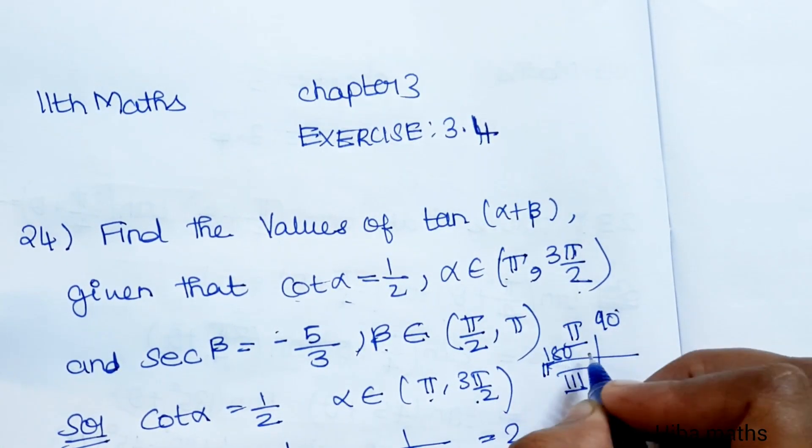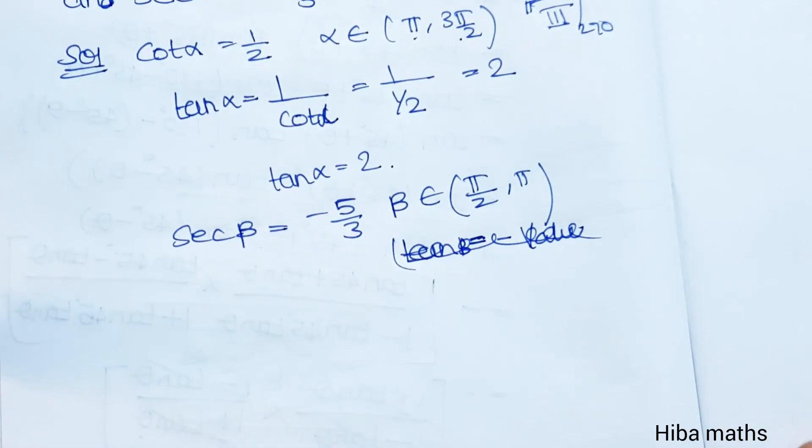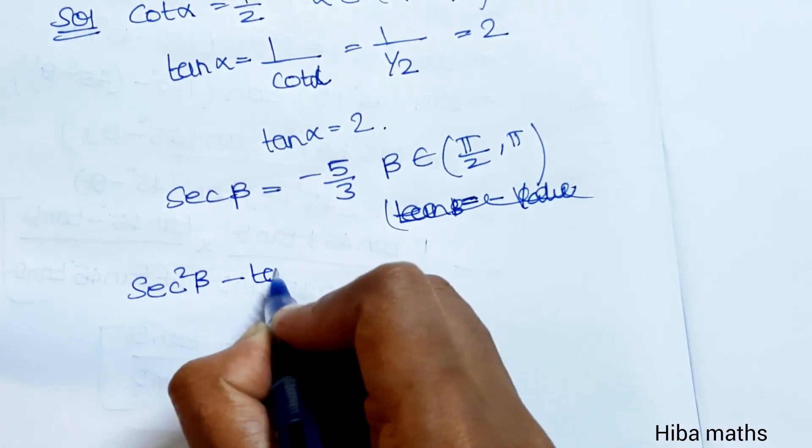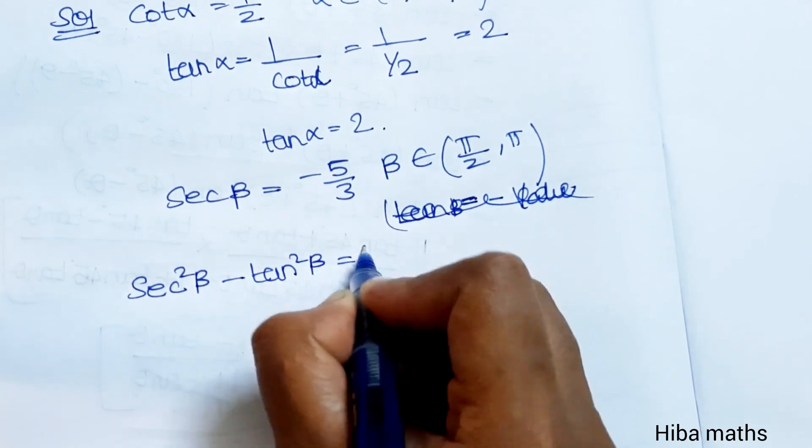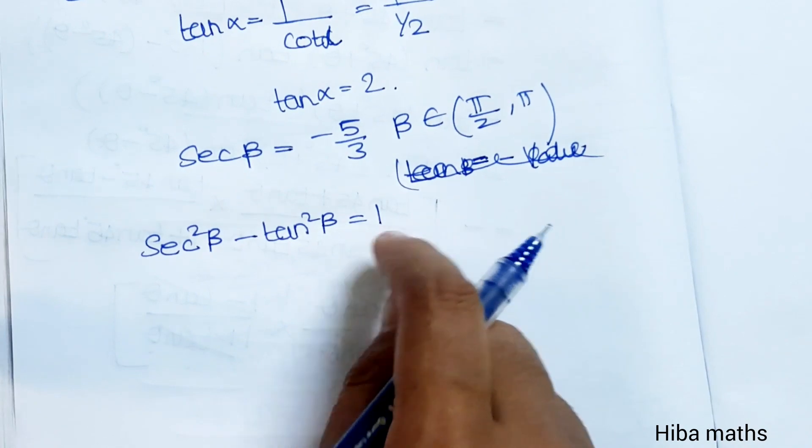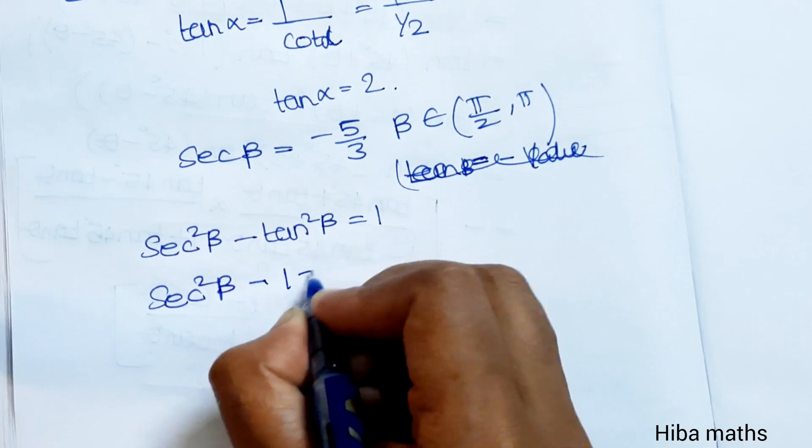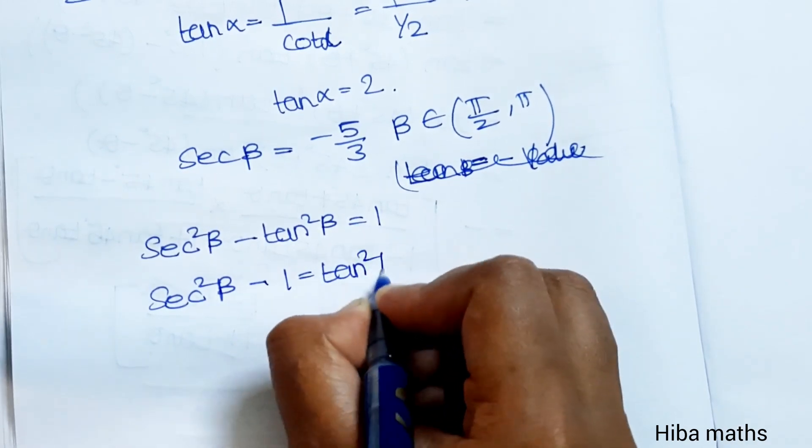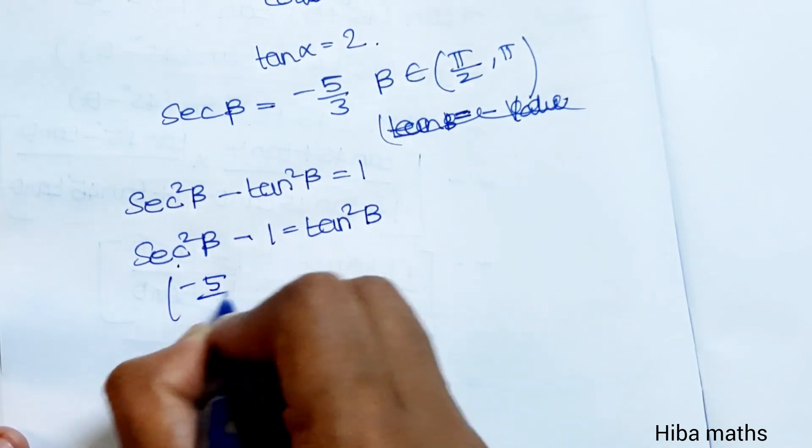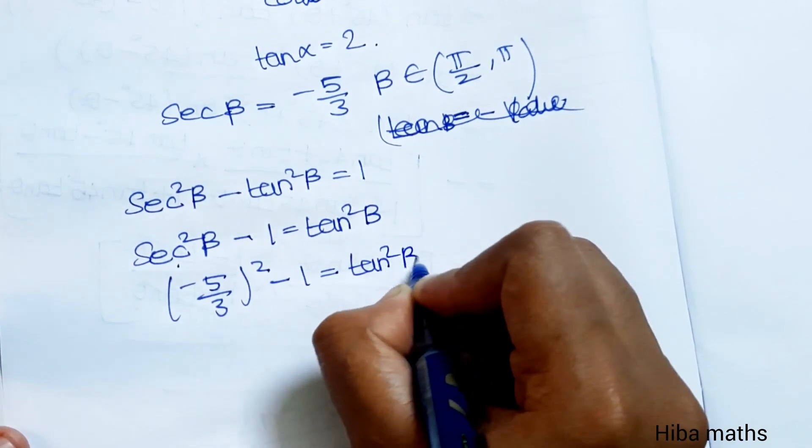β is in the second quadrant. In the second quadrant, tan is negative. We will use the related identity: sec²β - tan²β = 1. We can rearrange this as tan²β = sec²β - 1.